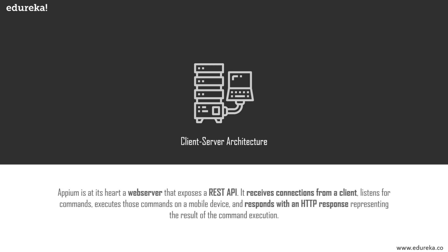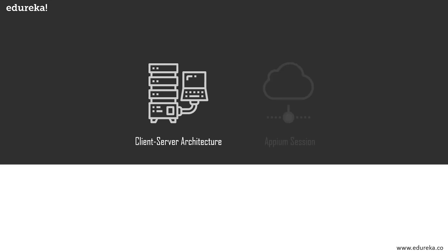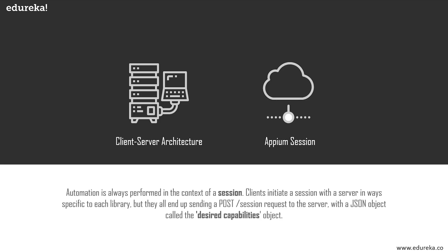Appium follows the client-server architecture where requests regarding automation are sent to the Appium server. The server processes the request in its own unique way and then responds with the test results or log files. The second key concept is Appium sessions. Everything in testing is done encapsulated in a session. The client sends POST requests, also known as session requests, to the server. These requests carry information in a JSON object format, and communication is executed using the JSON wire protocol.